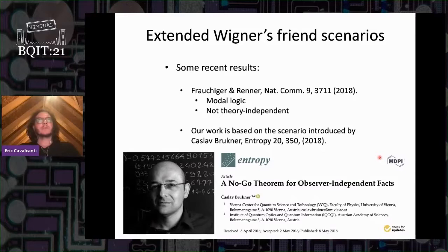Some recent results have proposed no-go theorems based on extensions of Wigner's Friend scenario to include multiple observers and entanglement. One drawback is that some are not theory independent. Our work is based on another scenario introduced by Časlav Brukner, where the initial intuition was that the friend's observations could replace the hidden variable in a Bell-type scenario. Our theorem has weaker assumptions.